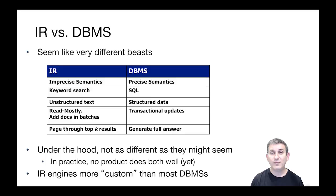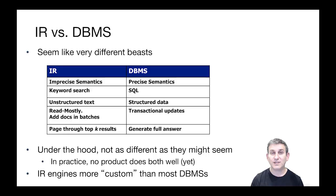A related difference is simply the language. The language of information retrieval is keyword search, and anyone can use it — it's really easy to get into information retrieval and use a search engine. By contrast, database management systems are targeted to programmers using a language like SQL, which is a structured query language that expects you to understand a bit of what it means. In information retrieval, the inputs are unstructured text documents usually intended for human comprehension, whereas database systems take structured data — usually tables of rows and columns.